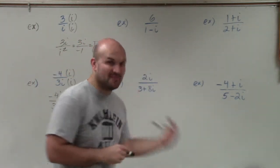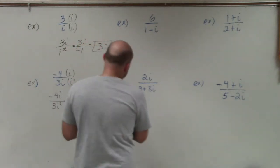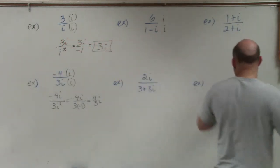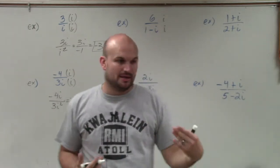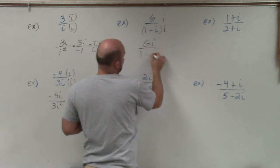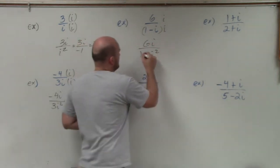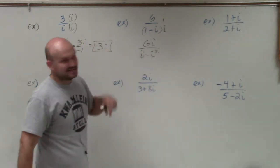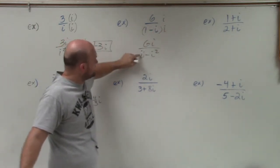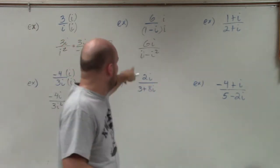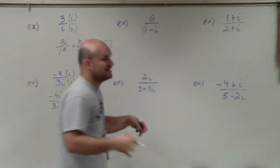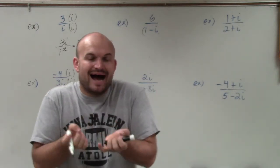Now for the fun ones. The most common mistake students make is seeing i in the bottom of a binomial and multiplying by i over i. But these examples are binomials, not monomials. When you multiply i by a binomial you have to apply the distributive property, and you'll still end up with i in the denominator. So instead, we have to multiply by the conjugate. The reason is the conjugate creates a difference of two squares, where the middle i terms cancel out.